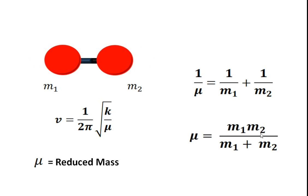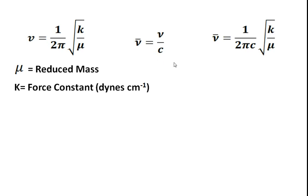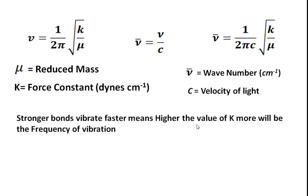So our reduced mass is m1 m2 upon m1 plus m2. We can calculate the vibration frequency of a molecule using this formula, where mu is the reduced mass and k is the force constant in dynes per centimeter. If we want to convert the vibration frequency to wavenumber, the wavenumber (mu bar) equals mu upon c. Substituting this value, the wavenumber is 1 upon 2πc under root of k over mu, where mu bar is the wavenumber in cm⁻¹, c is the velocity of light, k is the force constant, and mu is the reduced mass.